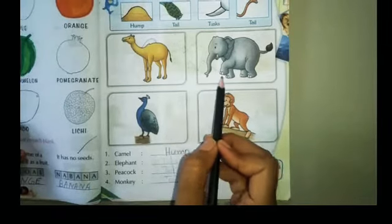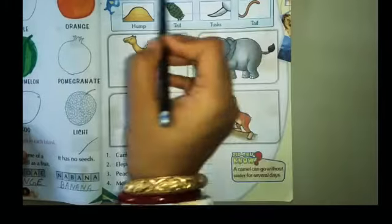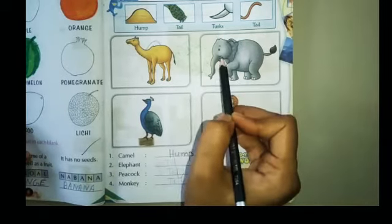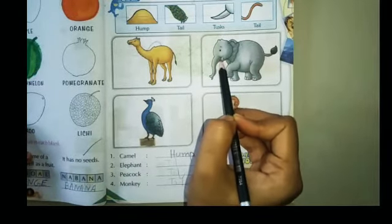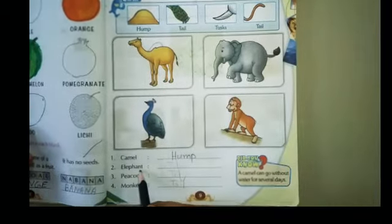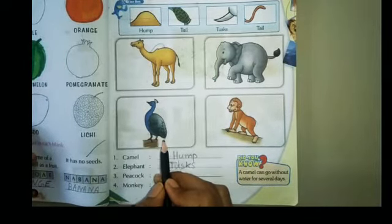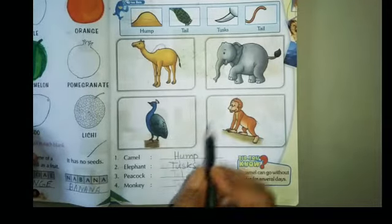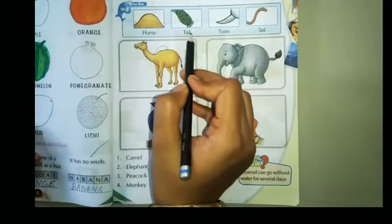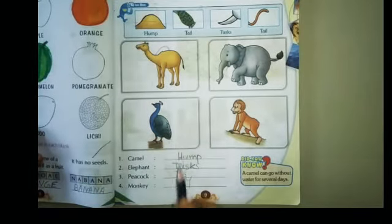Now next. What is this? This is the picture of an elephant. Which part is missing? T-A-I-L, tail. Look, this is the tail of a peacock. Tail here.